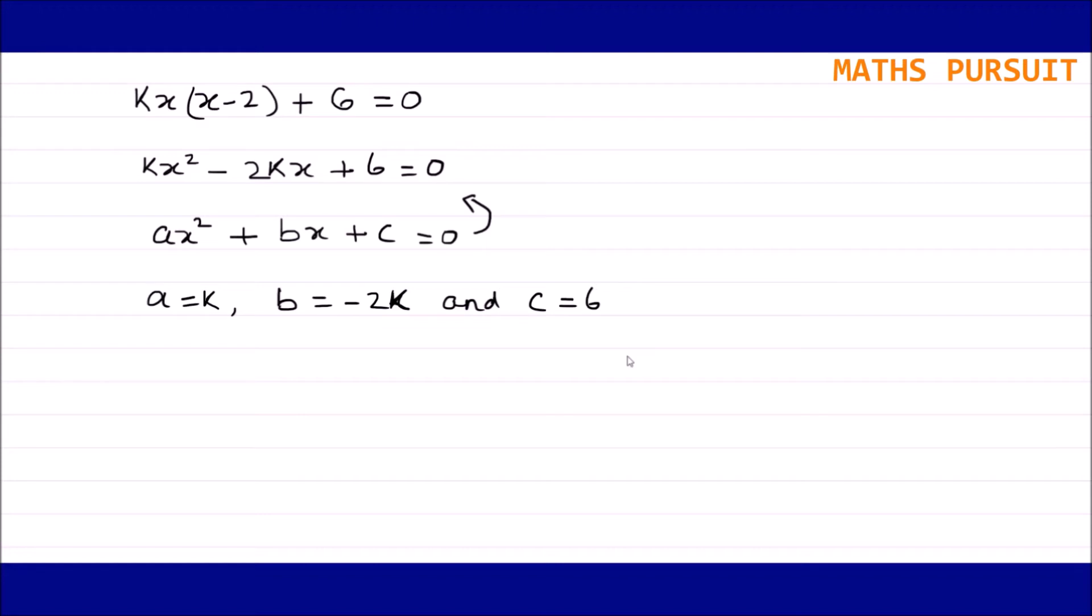Now coming to the other part of the question, we need to find the value of k. It is given that this particular equation is having two equal values of x. We will have two equal values of x when the determinant is equal to 0.